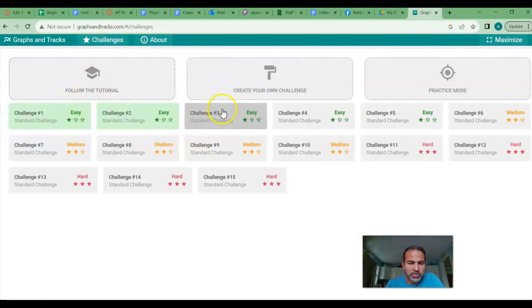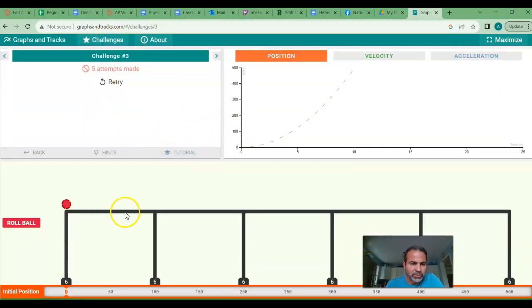I'm on challenge 3. I'm going to show you how you would go about solving this one. If I hit roll ball, nothing happens because I never gave an initial velocity to the ball. So what I've got to do is give it some velocity.